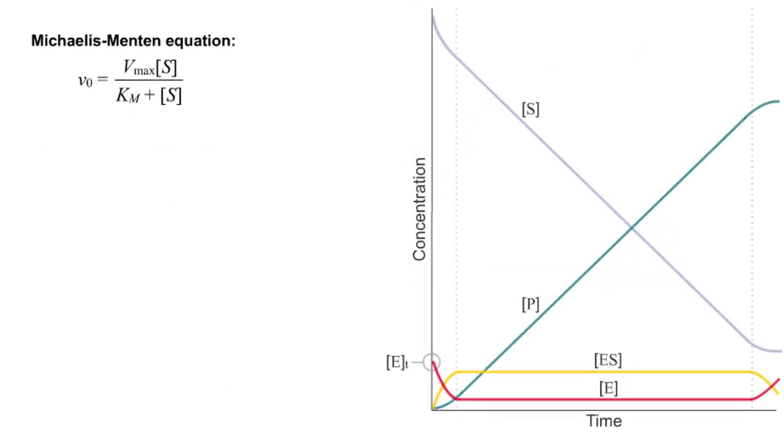This graph shows the reaction progress of an enzyme-catalyzed reaction. The Michaelis-Menten model makes a steady-state assumption, meaning that the concentration of the ES complex remains constant. This assumption is valid only when the concentration of substrate is much greater than the total enzyme concentration.